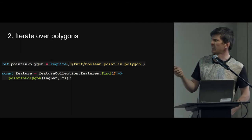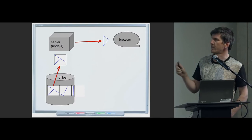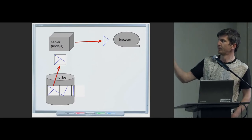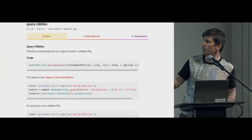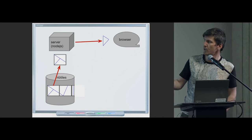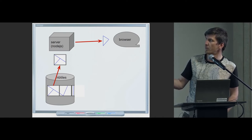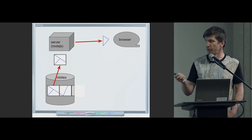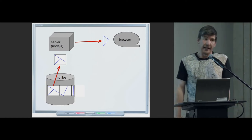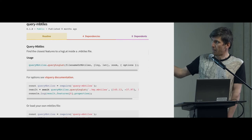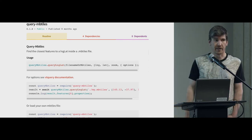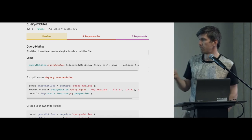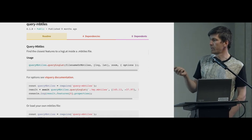As a server diagram — I'm so bad at server diagrams, it's so ugly — basically the browser makes a request, and the server first figures out which tile in the mbtiles file, then which polygon, and sends back information about the polygon. To simplify that, I wrapped all of that up inside an npm package called query-mbtiles, so you can find that on npmjs.com, and that'll simplify having to do that work yourself.